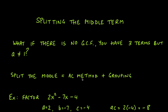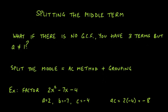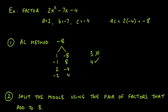It makes a whole lot more sense when we go over a couple of examples, so you'll see both techniques in action. Let's say we have to factor 2x² - 7x - 4. In this particular problem we see that we have a trinomial, and 2, 7, and 4 don't have a GCF, so we can't factor anything out, and the coefficient of the x² term is not one.